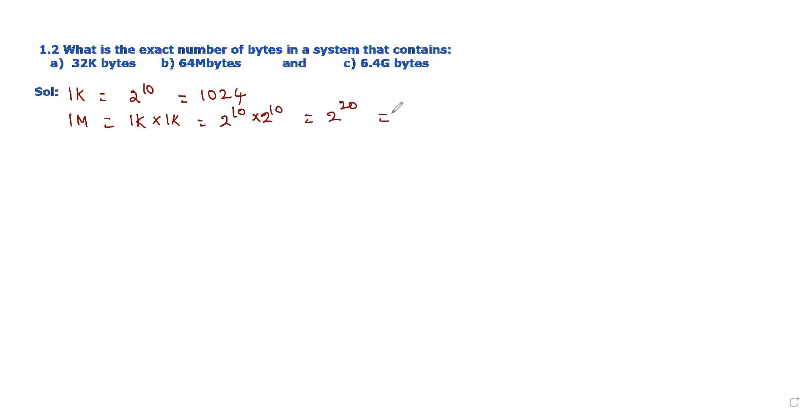Similarly, 1 giga equals 1K into 1K into 1K, which equals 2 power 10 into 2 power 10 into 2 power 10, also equal to 2 power 30. Its equivalent value is 1073741824. These values you can calculate on a calculator. Now we should find the equivalent number of bytes for part a, part b, and part c.